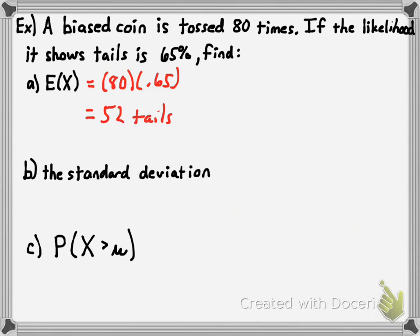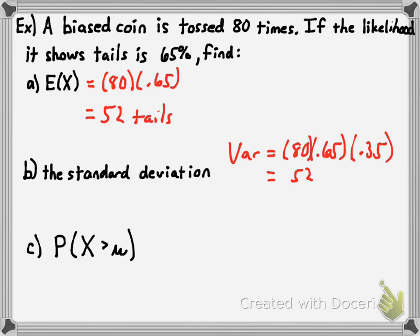Now for the standard deviation, we calculate variance first. Variance is n times p times q, so 80 times 0.65 — which is the mean, 52 — times q, which is 1 minus p, so 52 times 0.35 equals 18.2. The variance is 18.2, so the standard deviation sigma is the square root of that, which is approximately 4.3.